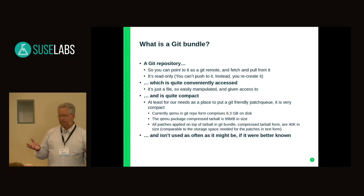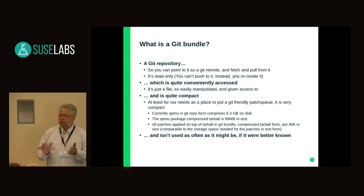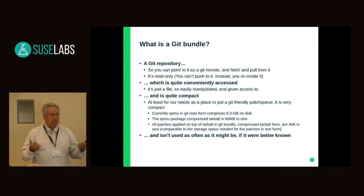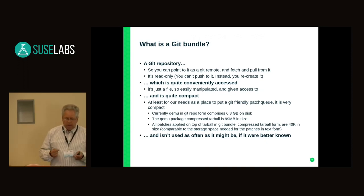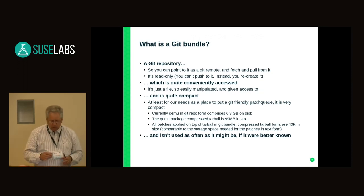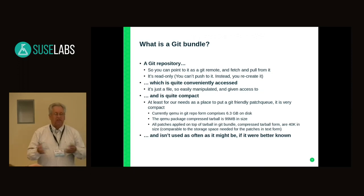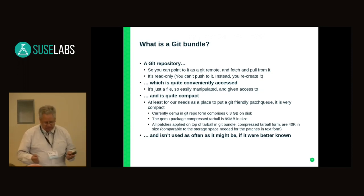So what is a git bundle? Basically it's a git repository that has kind of a special purpose. You can point to it as a git remote, and you can fetch and pull from it just like a normal repository you'd get through the wire. But it's read-only — it's a canned repository. You can't push to it. It's quite convenient; that's the whole reason for a git bundle. It's just a file — a repository in a file, easily manipulated as far as moving around, and easy to give access to. There are no access controls other than 'can I access this file?' It's quite compact.